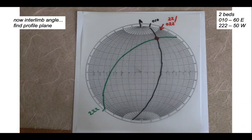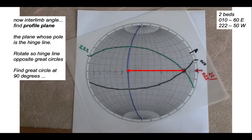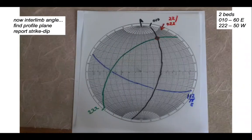Now let's find the profile plane so we can find the interlimb angle. Remember the profile plane has the hinge line as its pole. We rotate the hinge line so it's opposite a set of tracing circles, then measure across 90 degrees from the hinge line. That great circle — shown by the blue line — has the hinge line as its pole, so the blue line is now the profile plane. It has a strike of 112 and a dip of 78 degrees towards the south.